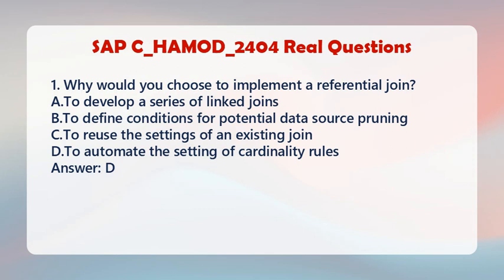Question 1: Why would you choose to implement a referential join? A. To develop a series of linked joins. B. To define conditions for potential data source pruning. C. To reuse the settings of an existing join. D. To automate the setting of cardinality rules. Answer: D.